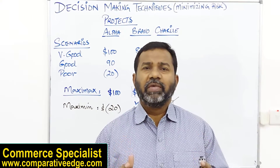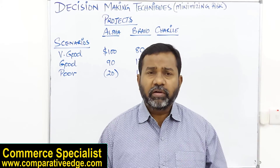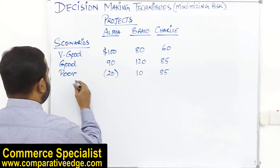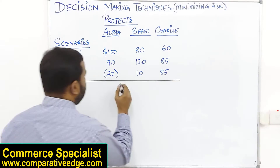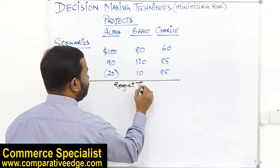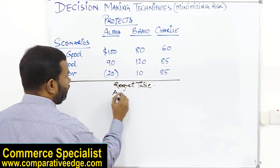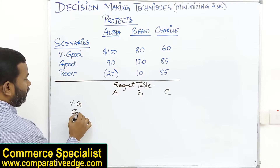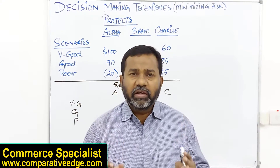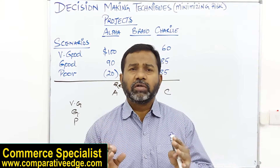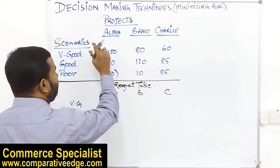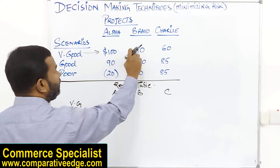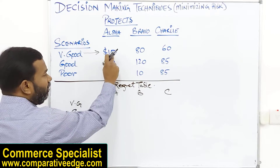The last decision criteria is the Minimax Regret Rule. To apply it, we first prepare a regret table. I'm making a regret table with the same columns — Alpha, Bravo, and Charlie — and the same rows for scenarios: Very Good, Good, and Poor. When building the regret table, we consider profits horizontally, row by row.